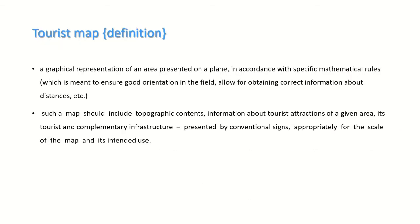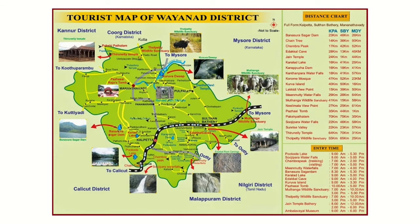A tourist map is a graphical representation of an area presented in accordance with specific mathematical rules. Such a map should include topographic content, information about tourist attractions of the given area, and its tourist and complementary infrastructure, presented by conventional signs appropriate for the scale and intended use of the map.